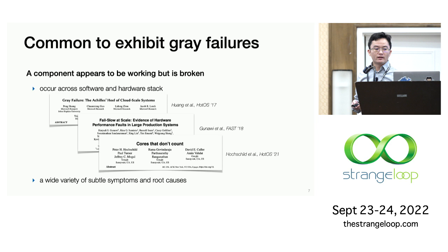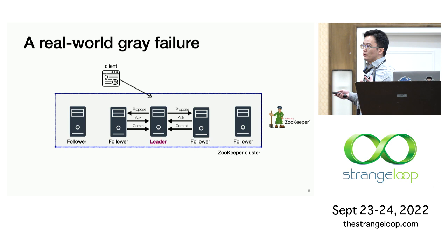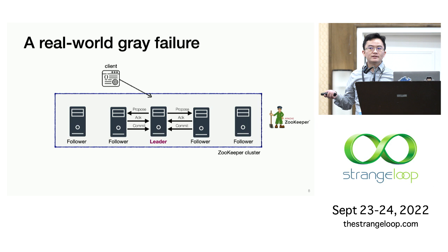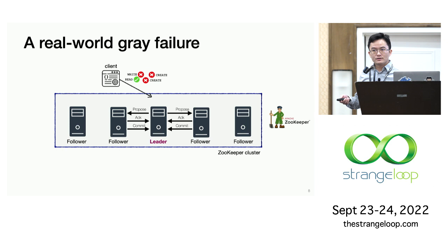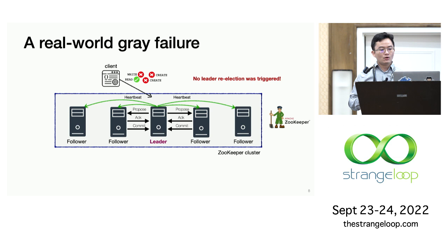In those gray failure cases, some system component may appear to be working but is in fact broken. As recent studies have shown, these failures occur across both software and hardware stacks, and they have very subtle symptoms and diverse root causes. To give a concrete example: in a production ZooKeeper cluster — ZooKeeper is a replicated service for distributed coordination — the leader periodically sends heartbeat messages to the followers for failure detection. In this case, the clients using ZooKeeper were experiencing many create or update errors, but reads could still succeed. Also interestingly, the leader was still exchanging heartbeat messages with the followers, so the pragmatic leader remained the leader and no re-election was triggered.